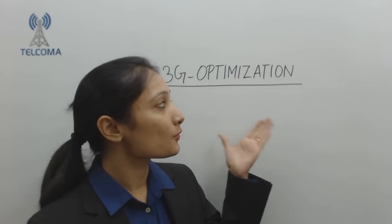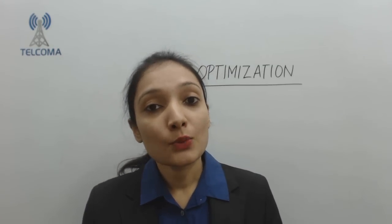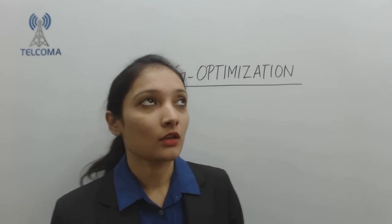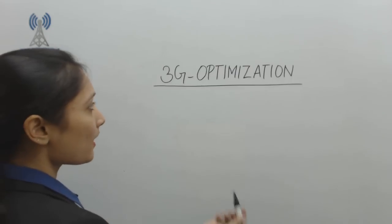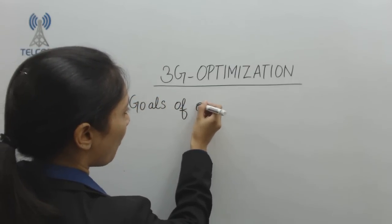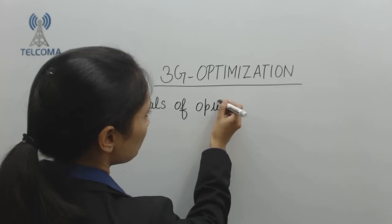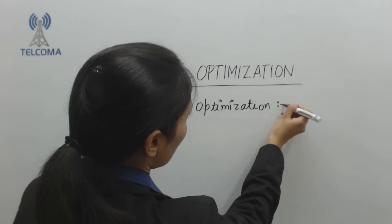Optimization is different from fault management. We can define optimization as the process of tuning an existing network to make the system work more effectively, meaning all radio resources are utilized more efficiently. So what are the goals of optimization if we're talking about 3G networks?